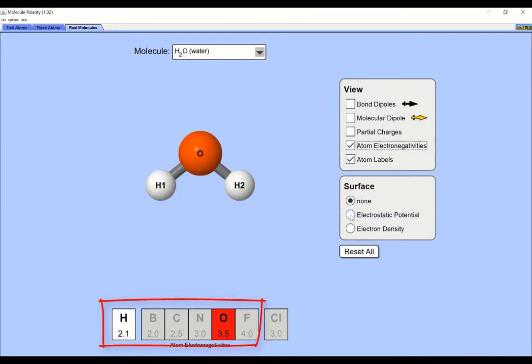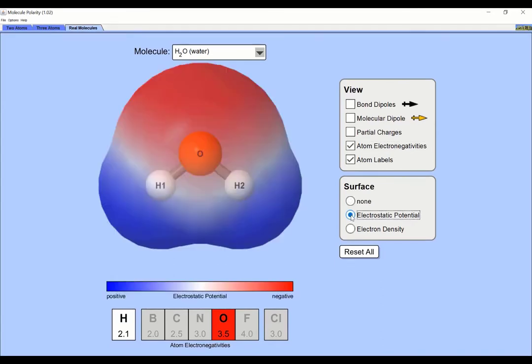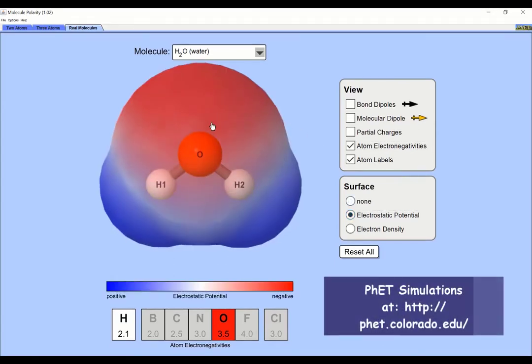This means that one end of the molecule, the oxygen end, has much more electron density than the other end. Here's a simulation from FET that illustrates the situation. The red colour around the oxygen indicates greater electron density.